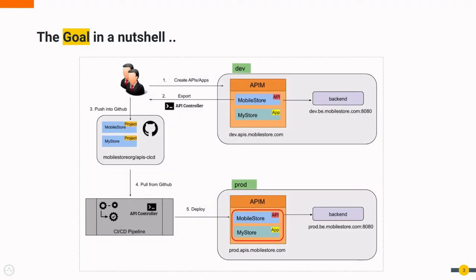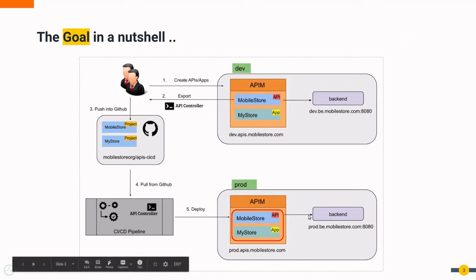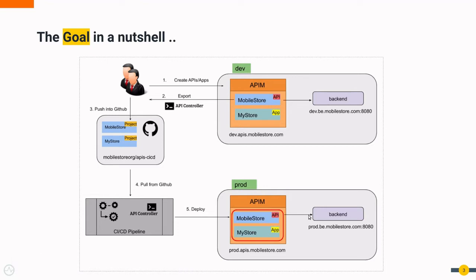This is about an example company that has a running business selling mobile phones and they are planning to expand their business by exposing an API called Mobile Store. They are also going to release an e-commerce web application called MyStore to sell mobile phones online. The company has two environments: the development environment and the production environment. API and application developers will only do development tasks in the dev environment, and in order to migrate to production, they have to do it via an automated pipeline.